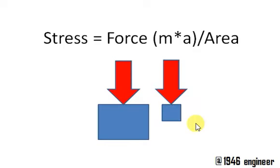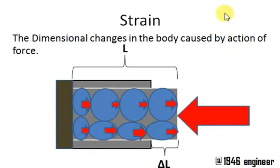Now let us get into the definition of strain. The dimensional change in a body caused by an external force is called strain. Consider this as an external force acting on this body. Due to this external force, there can be a dimensional change of this body.